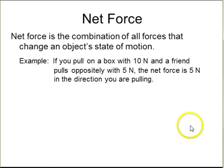The net force is the vector sum of all the forces that are acting on an object. For example, if you pull a box with 10 newtons, and a friend pulls oppositely with 5 newtons, and if you add those two vectors, 10 in one direction plus 5 newtons in the other direction, you end up with 5 newtons in the direction you are pulling. And that's the net force.